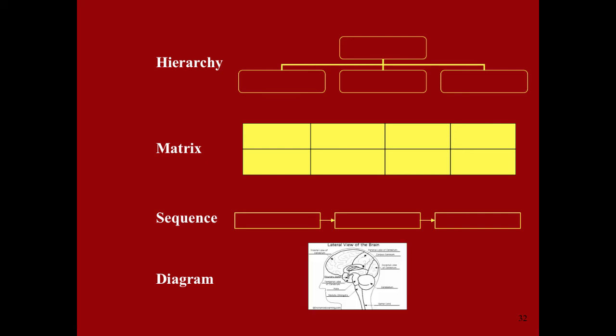Lastly, diagrams show the appearance and location or parts of something. For example, if you're taking an anatomy class, it will be entirely more productive to have a labeled picture of different muscle groups than to describe the location of these groups in words.